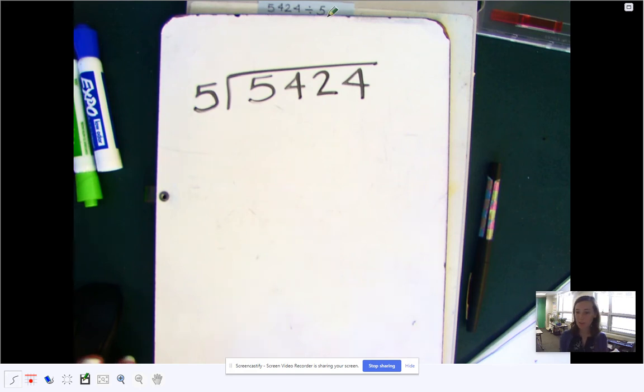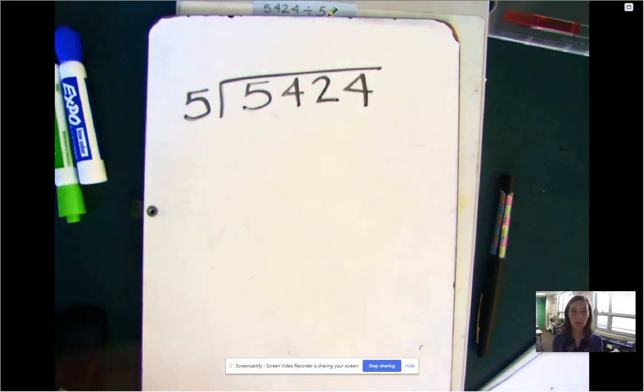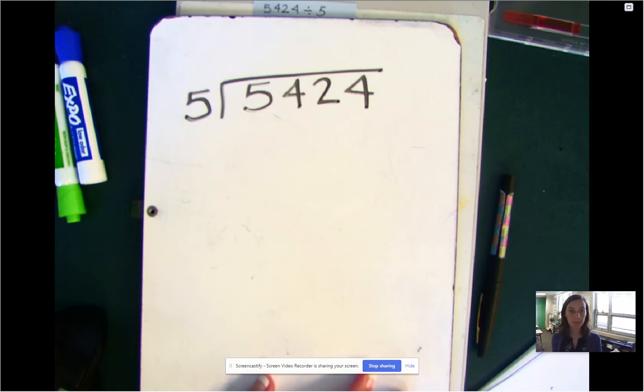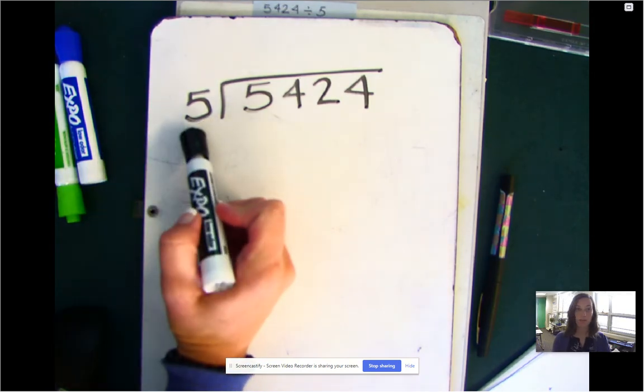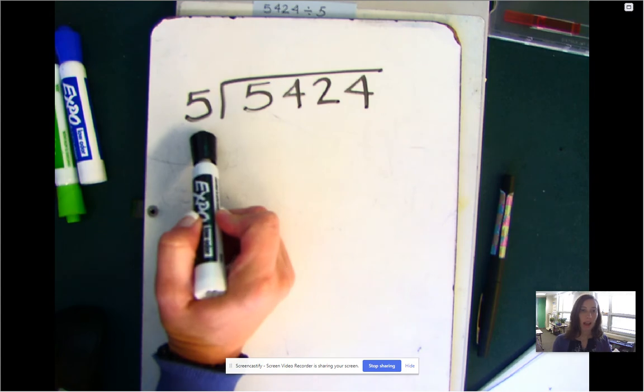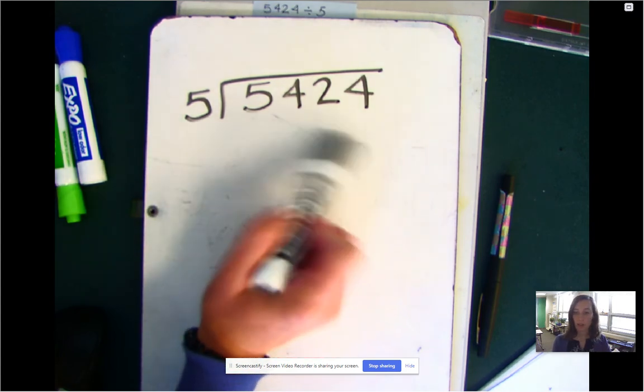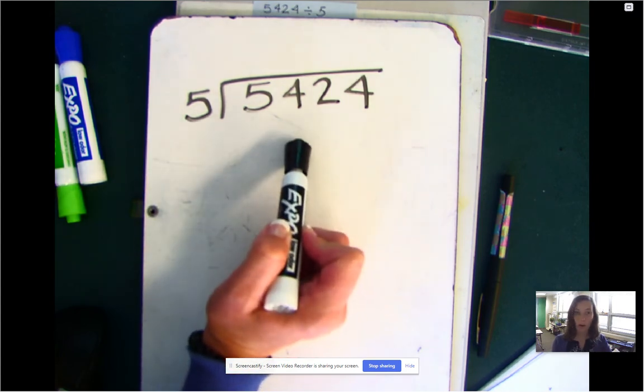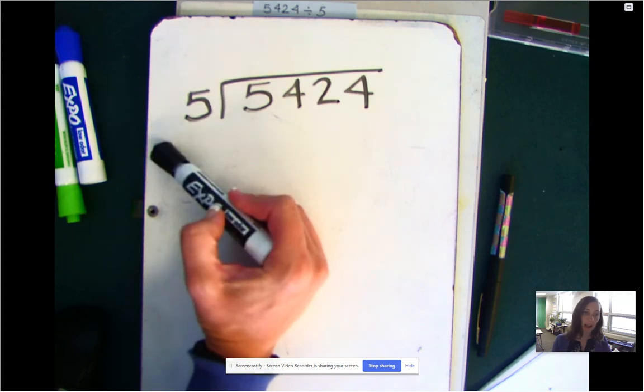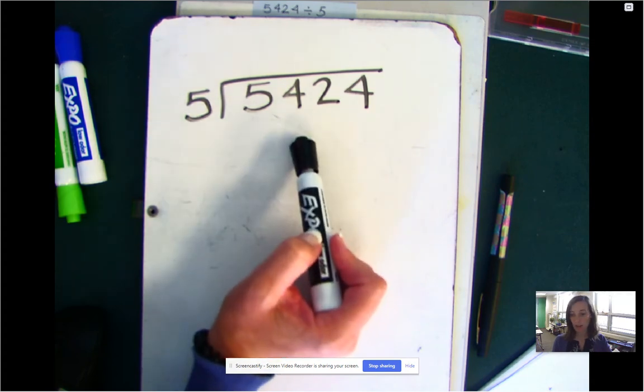Hey everybody, I am going to walk through how to do long division. So we know that the two division questions are either if I have five groups, how many things will go in each group? Or if I make groups of five, how many groups can I make out of this much?